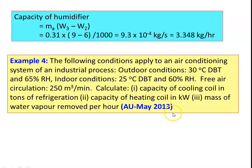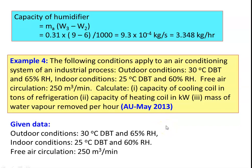Example 4 (from university exam, May 2013): An air conditioning system for an industrial process. Outdoor conditions: 30°C dry bulb temperature and 65% relative humidity. Required indoor conditions: 25°C dry bulb temperature and 60% relative humidity. Free air circulation is 250 m³/min. Calculate: (1) capacity of the cooling coil in tons of refrigeration, (2) capacity of the heating coil in kW, and (3) mass of water vapor removed per hour.